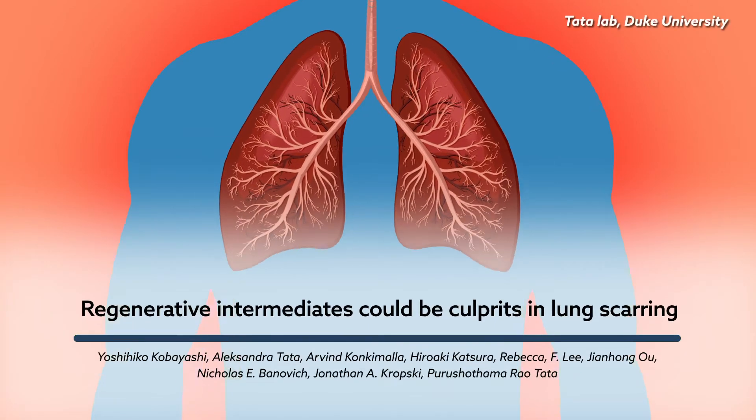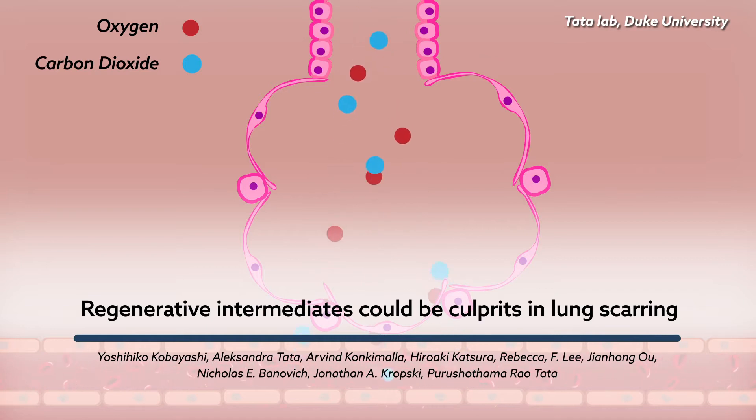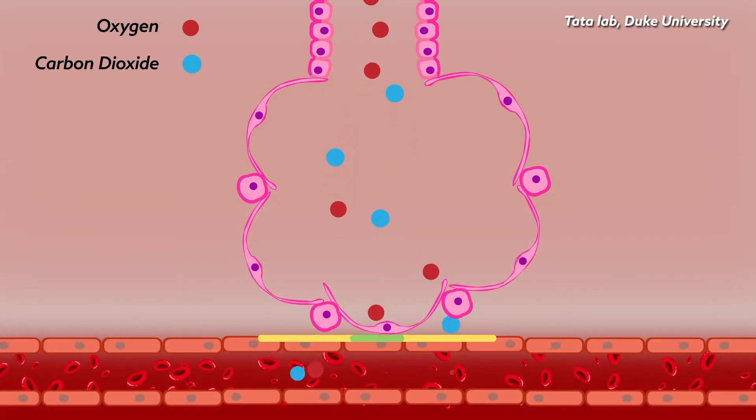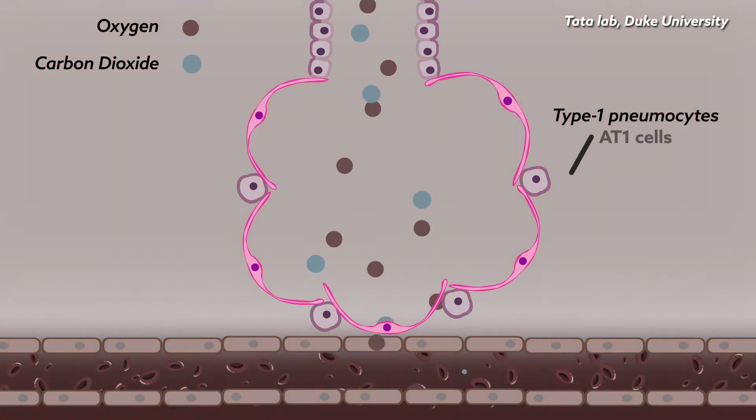Our lungs use very fine tissues to exchange oxygen and carbon dioxide between the air and our blood. About 95% of this tissue is made up of a single kind of cell, called type 1 pneumocytes, or AT1 cells.